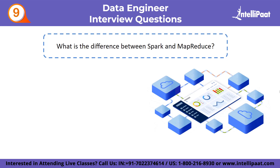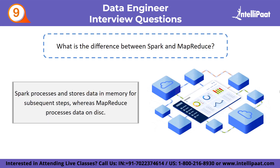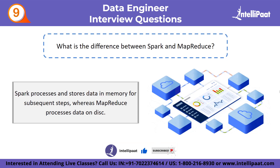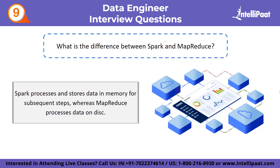Ninth question: what is the difference between Spark and MapReduce? Spark is a MapReduce enhancement for Hadoop. The distinction is that Spark processes and stores data in memory for subsequent steps, whereas MapReduce processes data on disk. As a result, for smaller workloads, Spark's data processing speed is up to 100 times faster than MapReduce's. In addition, unlike MapReduce's two-stage execution procedure, Spark creates a directed acyclic graph to schedule tasks and orchestrate nodes across the Hadoop cluster.